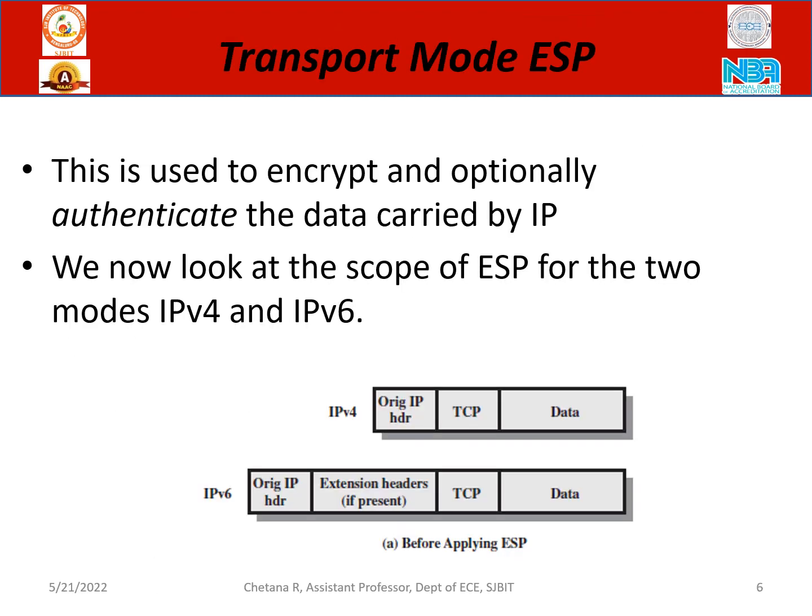How exactly is the data protected in transport mode ESP? Transport mode ESP is used to encrypt and optionally authenticate the data carried by IP. Authentication is optional because the data is already going through gateways, routers, and firewalls — so authentication is taken care of there. No need to do it again and again; that can be optional.